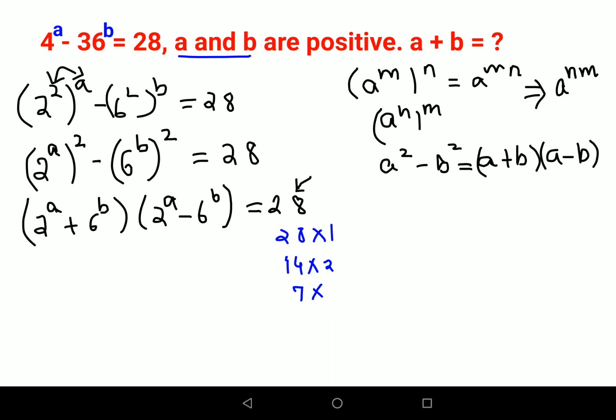Now if you look closely, we know that a and b are positive, so 2 raised to any positive number will always be even and 6 raised to a positive number will also be even. So even plus even will get you even, and even minus even will also get you even. So we need to select only those products which both values are even.